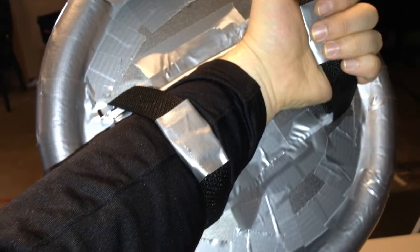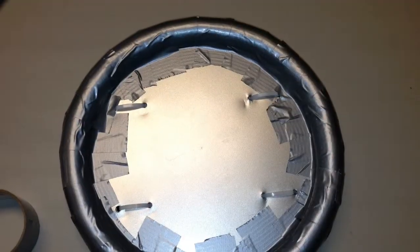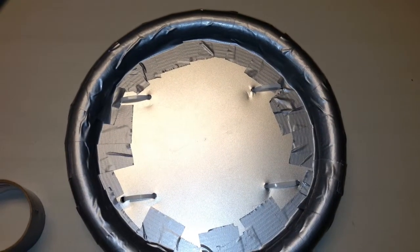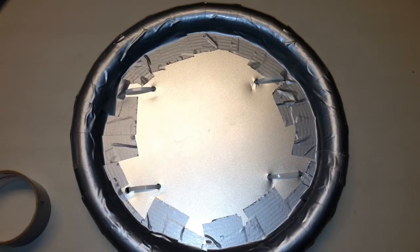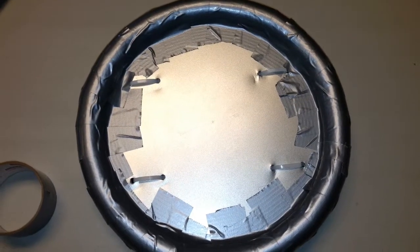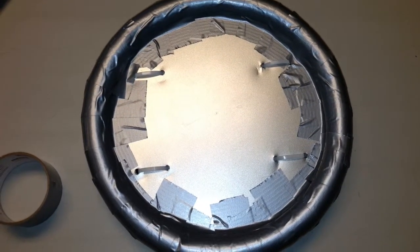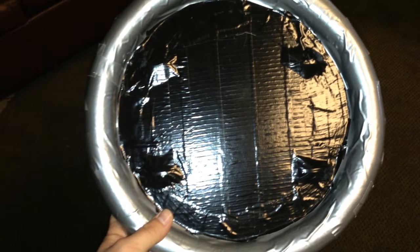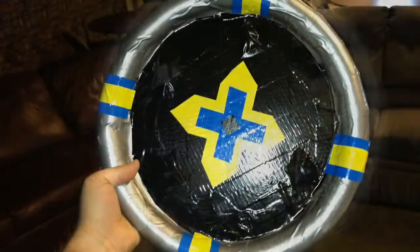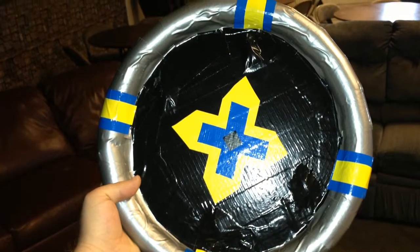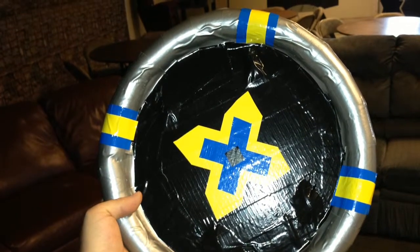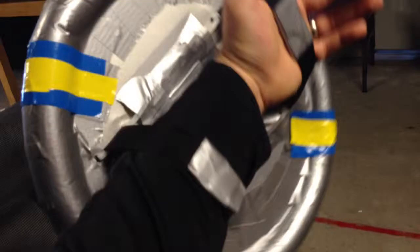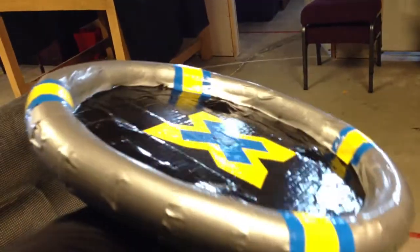That pretty much is the basic structure of your shield. Now you can begin to decorate it. You're going to want to duct tape over the front of the shield where the zip ties come through. They can be kind of sharp and unsightly. So I just did a black face on the shield and did some decoration. Now you can kind of see what the shield looks like.